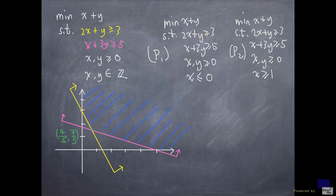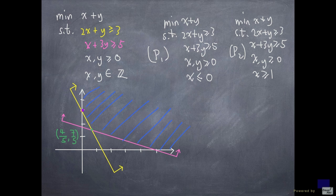And now, if we solve this problem P1, we will have an optimal solution right here, 0 comma 3. Whereas for the problem P2, we will have an optimal solution here. So this point here is 1 comma 4 over 3.